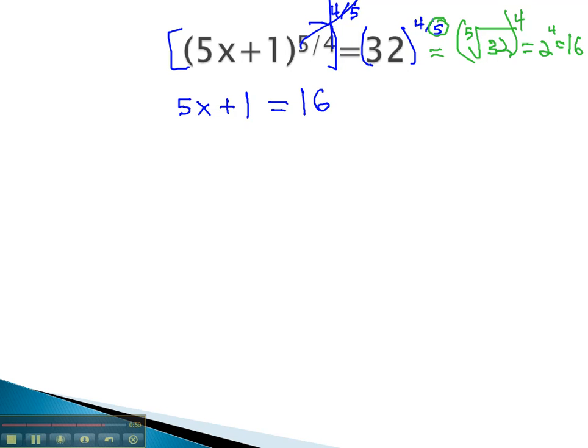We can continue solving by subtracting 1, giving us 5x equals 15, and then finally dividing by 5 to find out x equals 3.